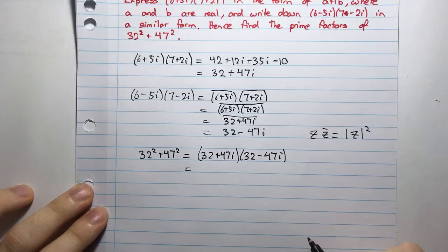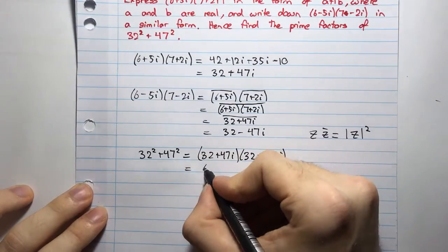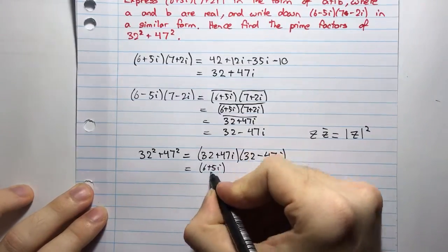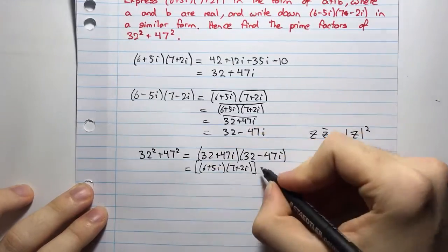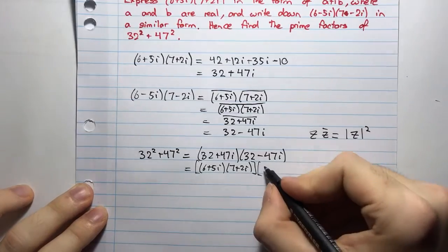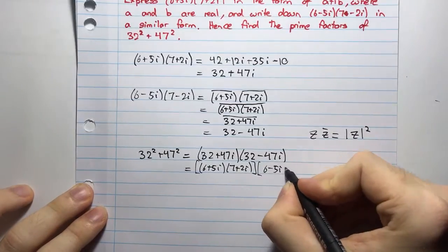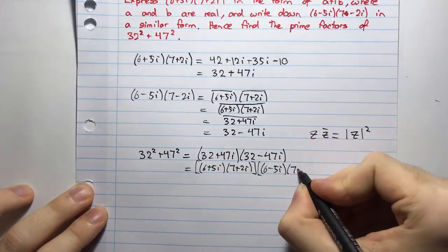And the modulus squared is going to be of the form a² + b², which looks like what I have here. So, I will say that 32² + 47², well, that's going to be equal to (32+47i)(32-47i). What are these things? They are (6+5i)(7+2i). That's the first one.